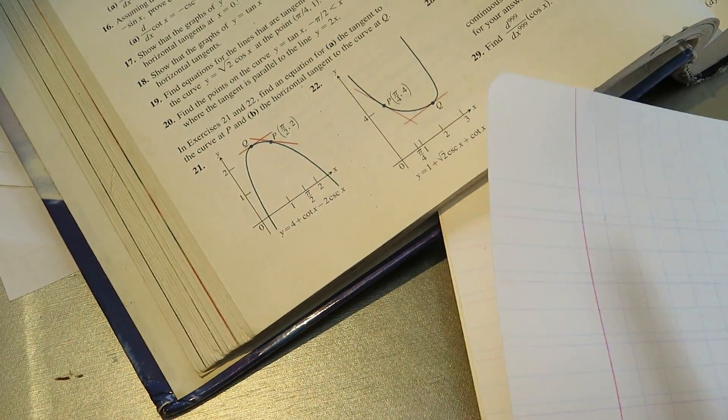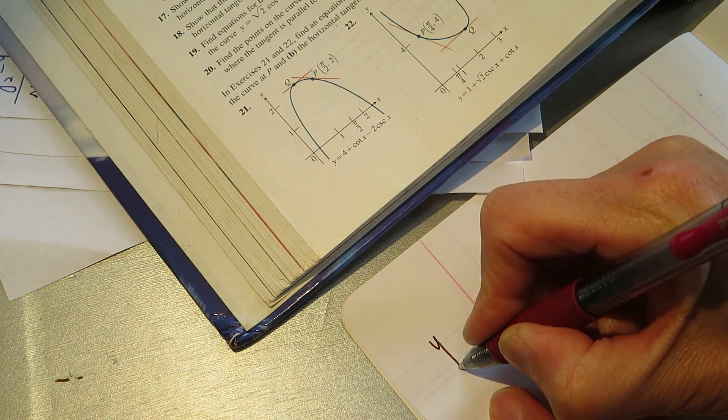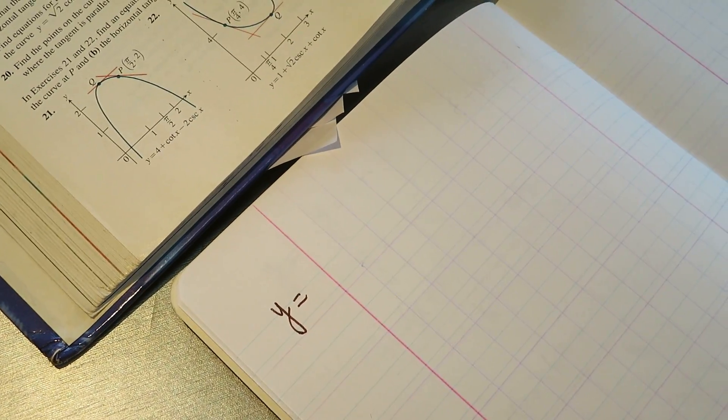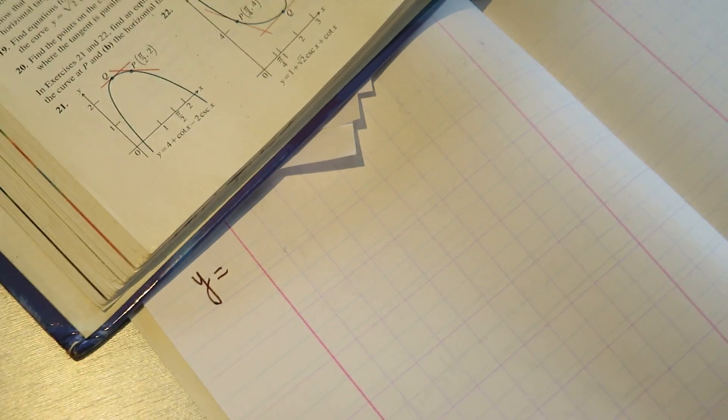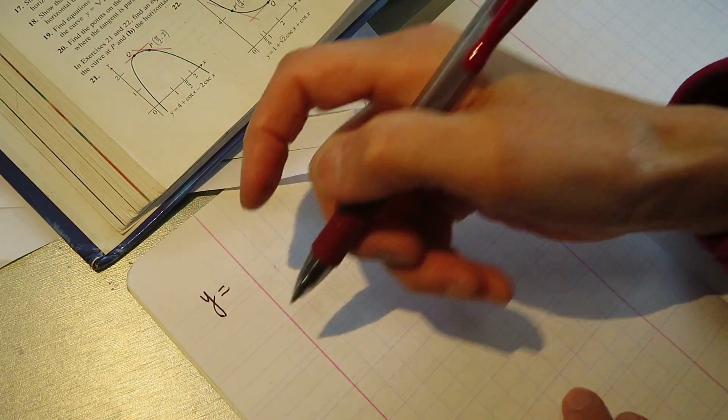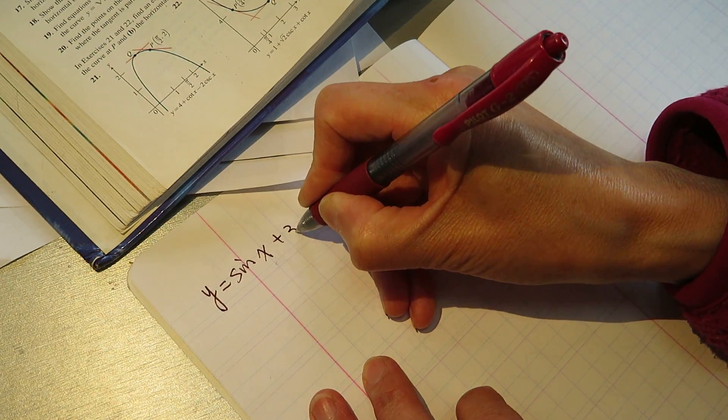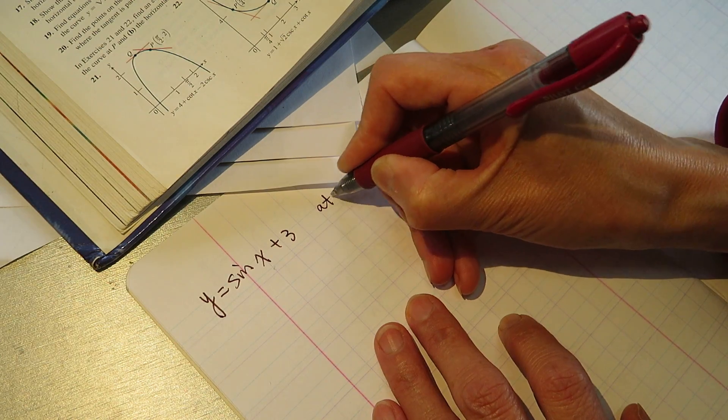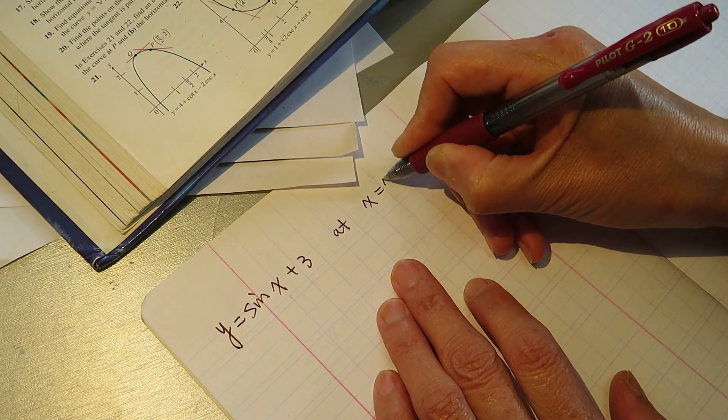And we know the graph, the function was y equal sin x plus 3, right? And at which point at x equal to pi.